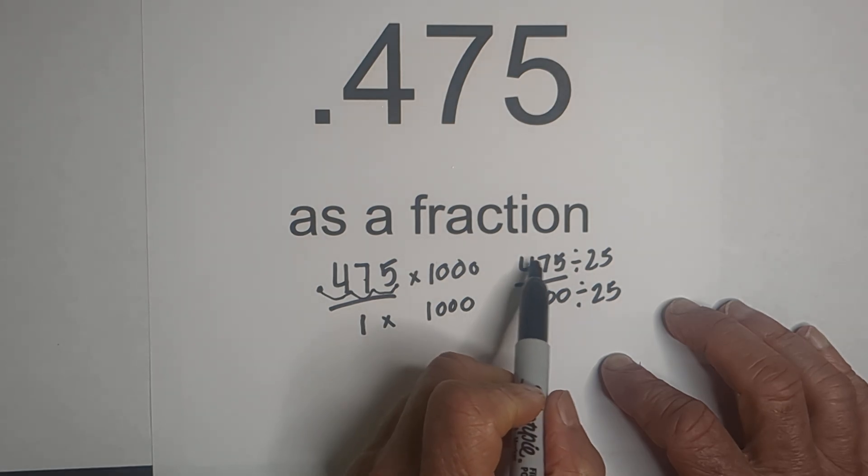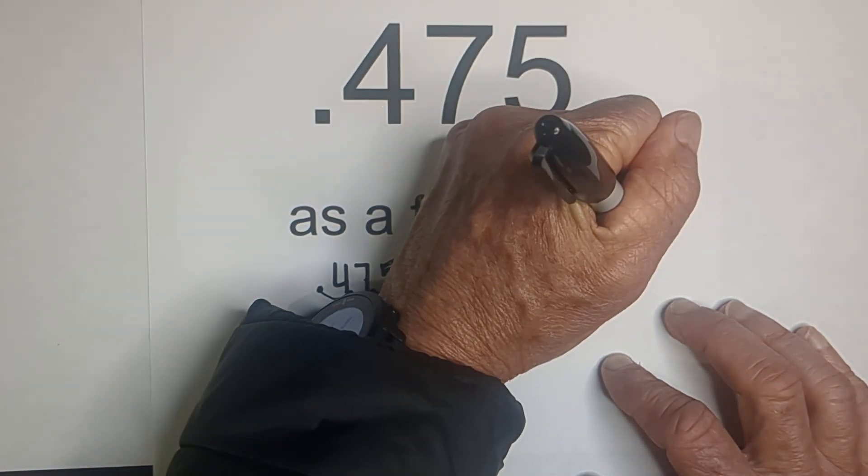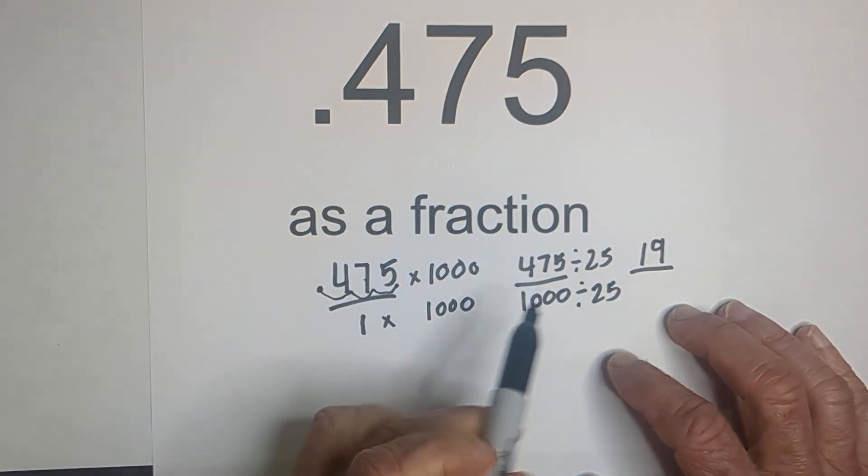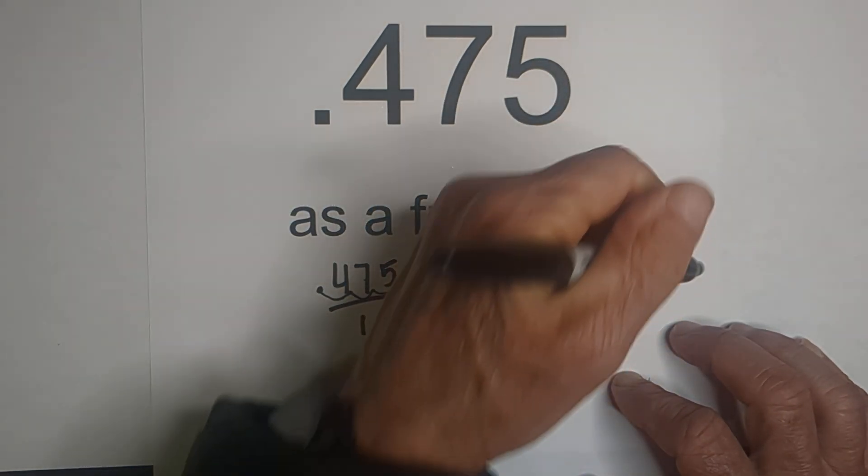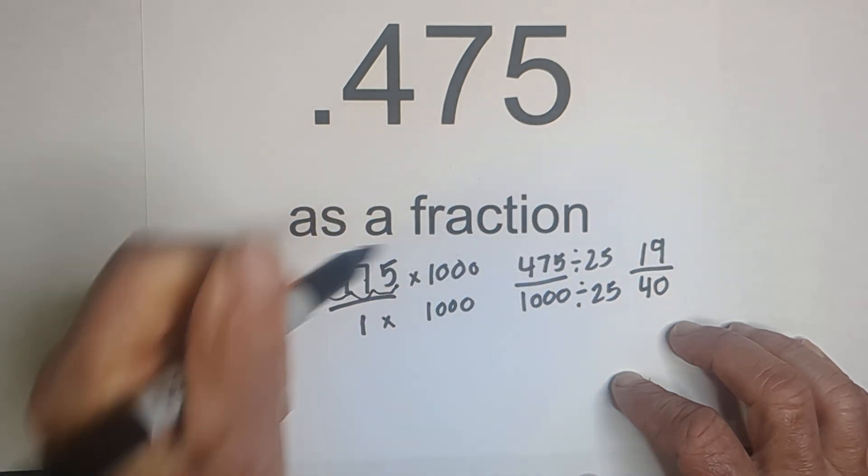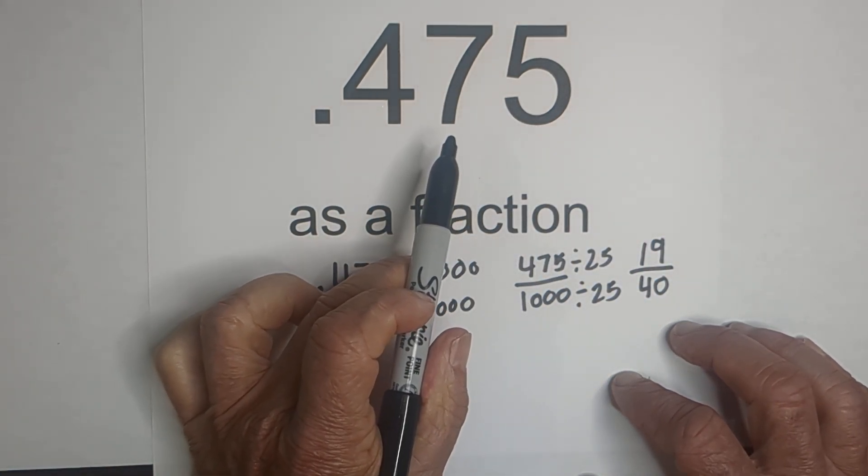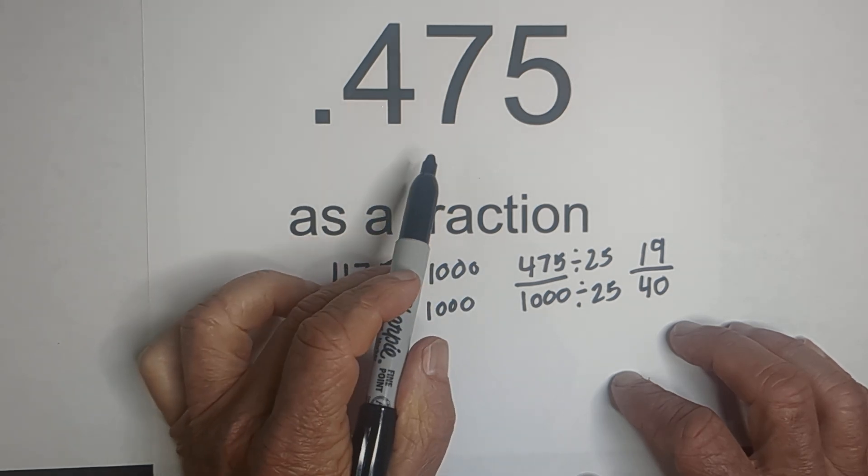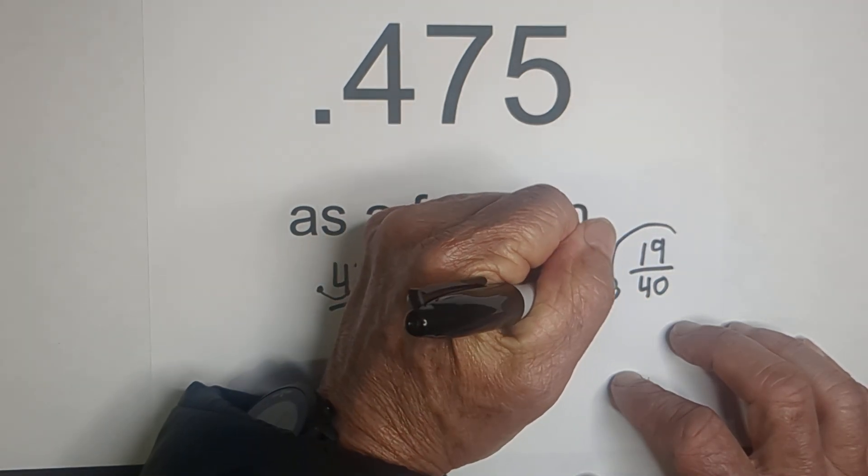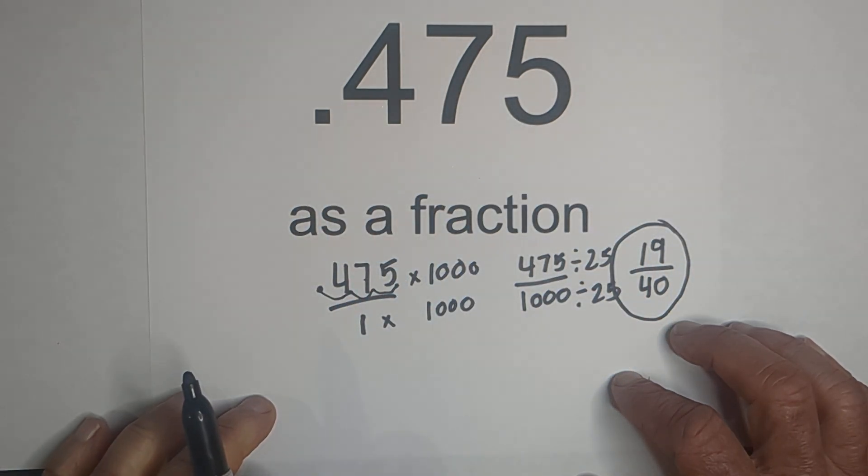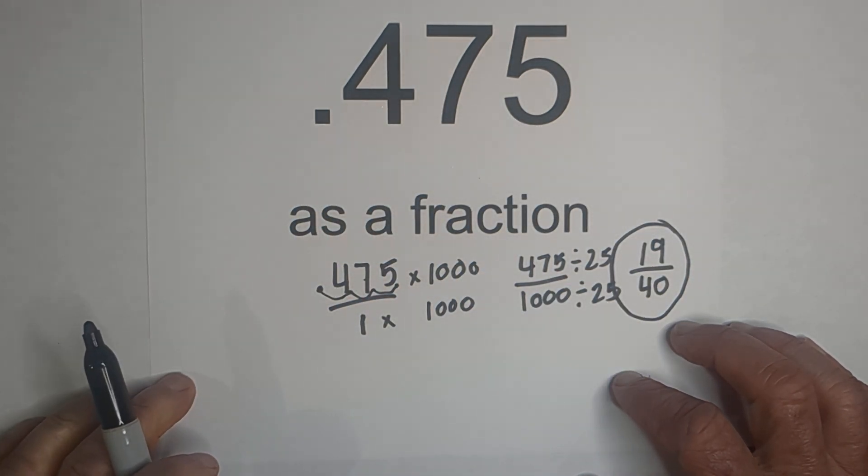So 475 divided by 25 is 19 and 1,000 divided by 25 is 40. So 475 thousandths or 0.475 converted to a fraction is 19 over 40 because 19 is a prime number.